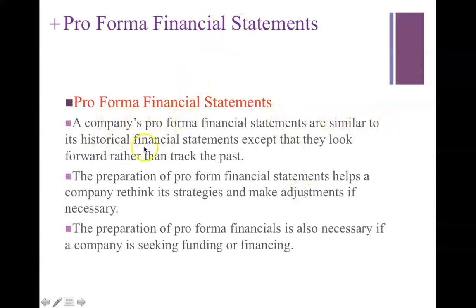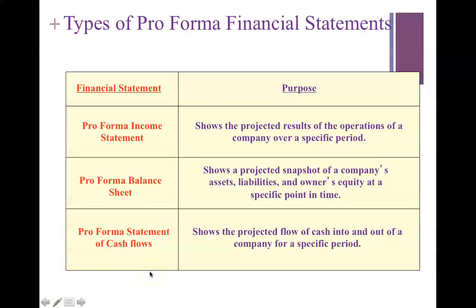Pro-forma financial statements are similar to historical ones except they look at the future rather than the past. These pro-forma financials are necessary for a company seeking funding or financing. The three types are: the pro-forma income statement, which shows projected results of operations over a specified period (closest to your assessment question); the pro-forma balance sheet, showing projected assets, liabilities, and owner's equity at a specific point in time; and the statement of cash flows, showing projected cash flowing into and out of the company for a specified period.